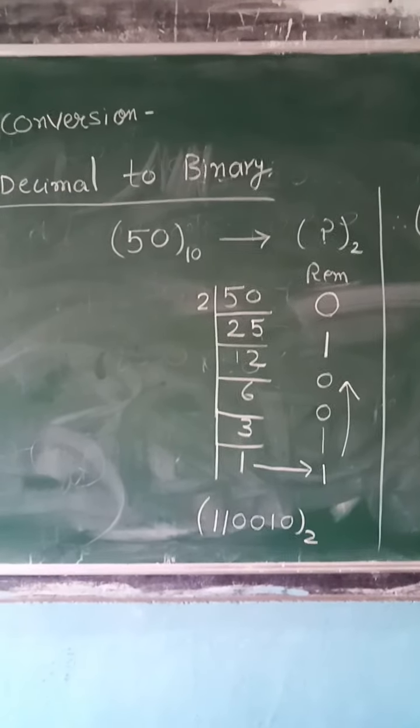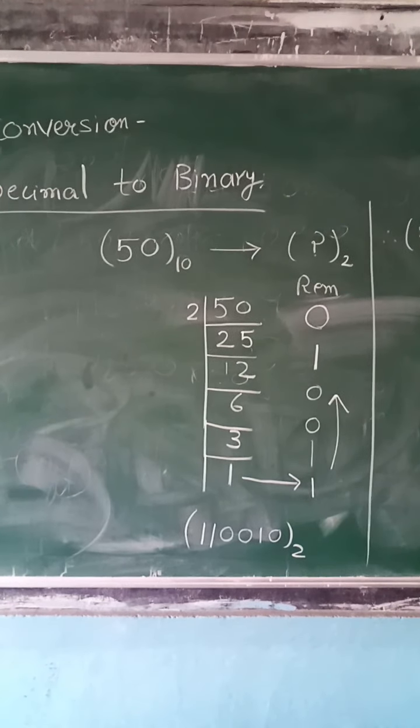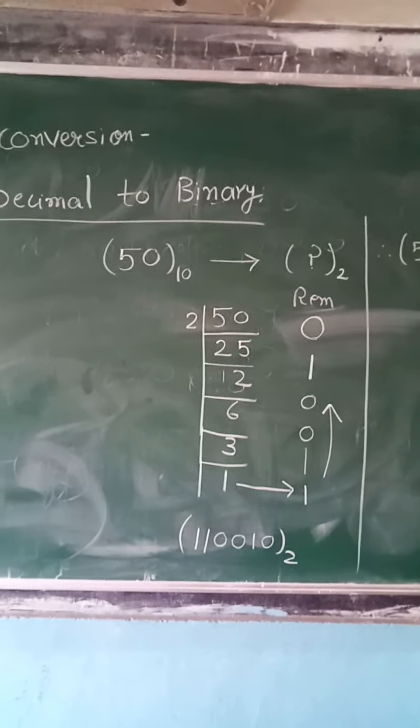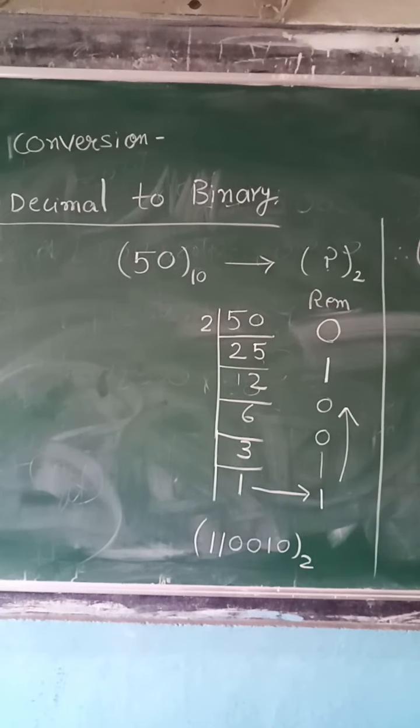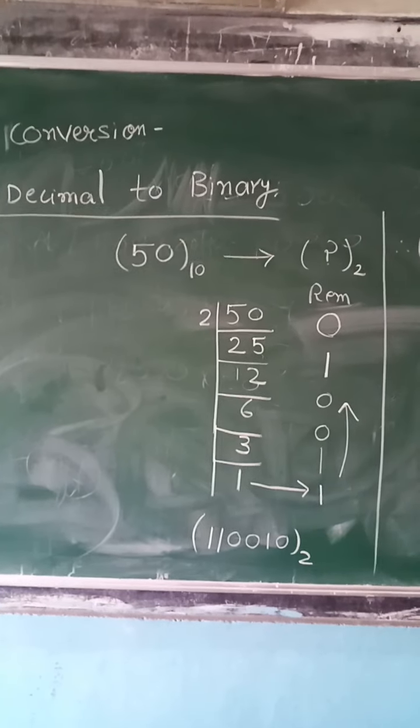So for that, you have to divide 50 by 2, then quotient is 25 and remainder is 0. 50 is divided by 2, 2 goes into 4 and 2, 5 goes into 10. So remainder is 0.